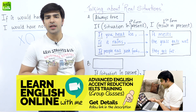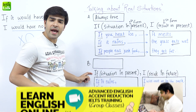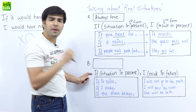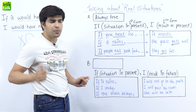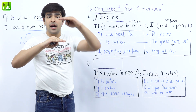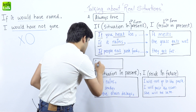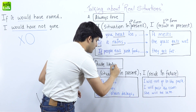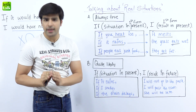Let's quickly move on to the next one. This was all about real life general facts. Now in the next situation, we have something that is quite likely to happen — it happens often, but it is not a certainty that it will happen every time. There are chances that it will happen.